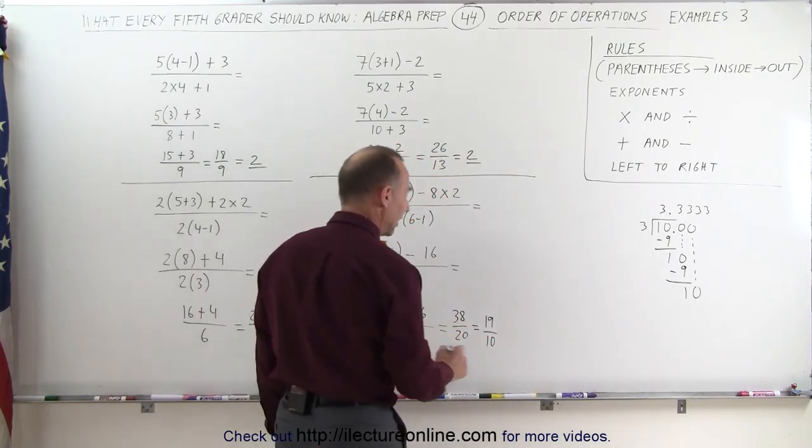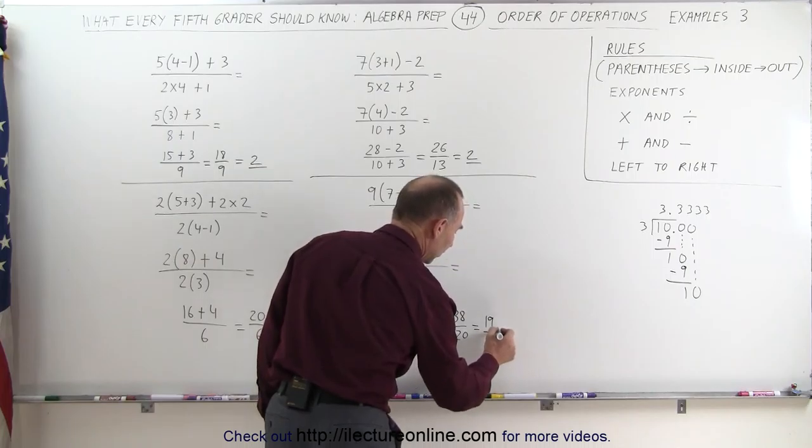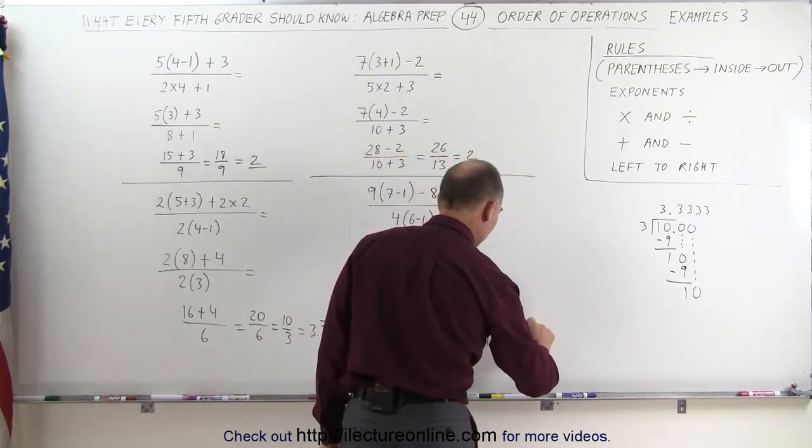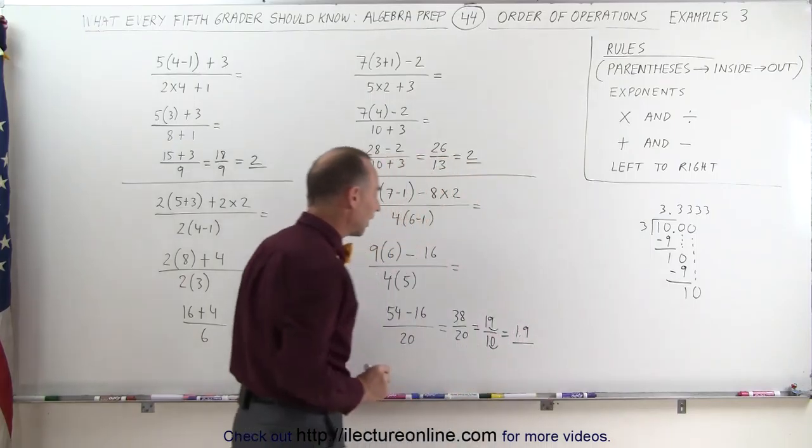And 19 divided by 10, if I move the decimal place over 1, and move the decimal place over 1, 19 divided by 10 can be written as 1.9, and that's the final answer for that one.